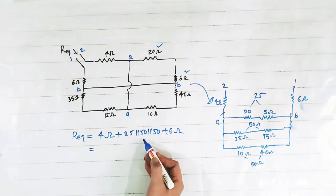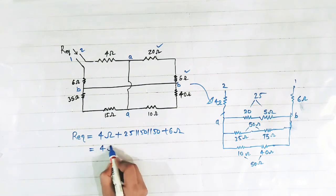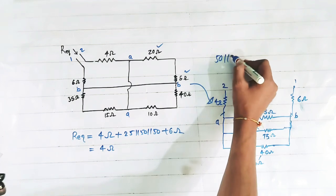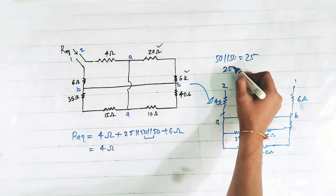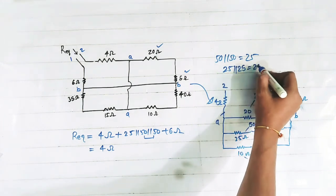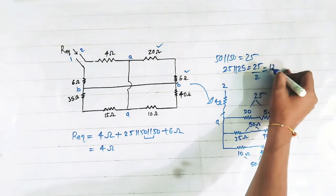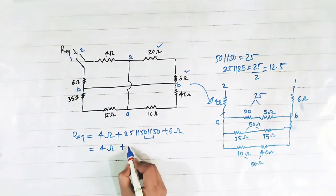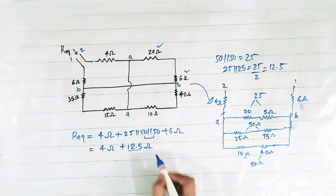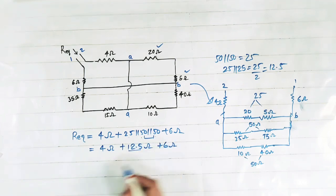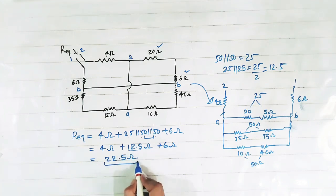We know that 50 parallel 50 is 25. So this equals 25, and 25 parallel 25 equals 25 by 2, which is 12.5. So 4 ohm plus 12.5 ohm equals 25 ohm parallel 50 ohm parallel 50 ohm, plus 6 ohm. So we get 22.5 ohm as the answer. The equivalent resistance of this circuit is 22.5 ohm.